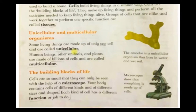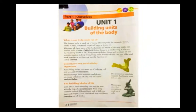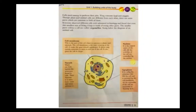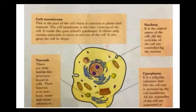On the other hand, human beings, animals and plants are made up of billions and billions of cells and are known as multicellular organisms. Now let's move on to the next page: the structure of the cell.